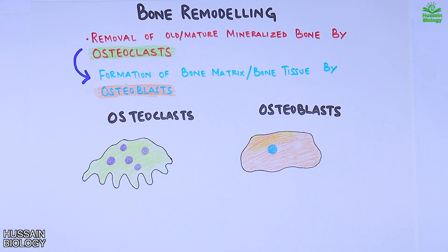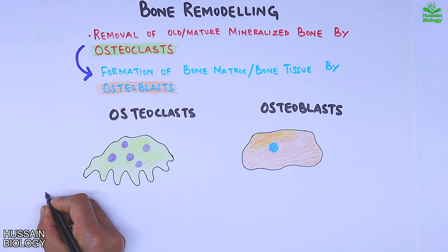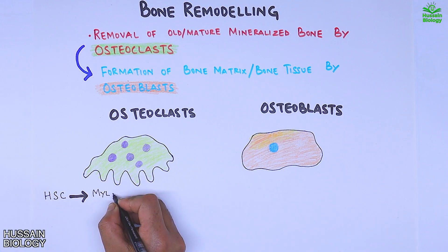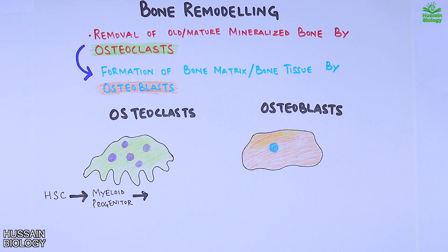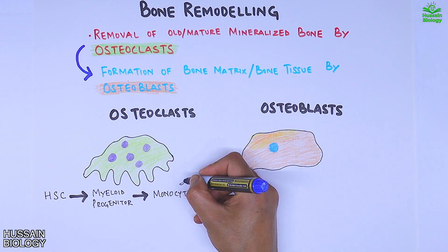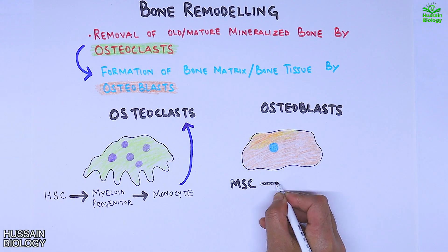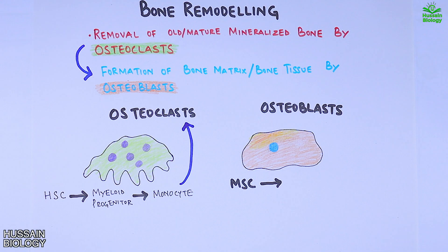Looking at the origin of the osteoclast, it comes from the HSC — the hematopoietic stem cell. This HSC gives rise to the myeloid progenitor, which then gives rise to the monocyte, and from the monocyte we get the osteoclast. On the other hand, the osteoblast has its origin from the MSC — the mesenchymal stem cell. The MSC gives rise to the osteoblast progenitor, which in turn gives rise to the osteoblast.